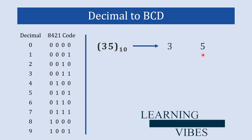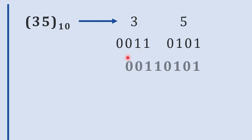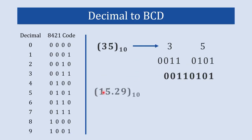First of all we will write 3 and 5 separately. We will start with 5 — the BCD code equivalent to 5 is 0101, so we write 0101. And the BCD code equivalent to 3 is 0011, so we write that here. Now we combine these two numbers and this will be the BCD code equivalent to decimal number 35.